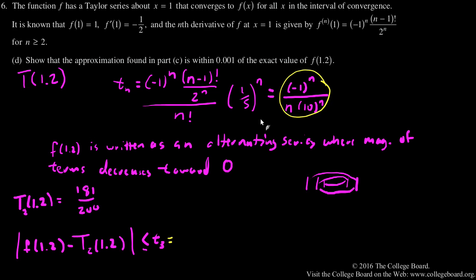The third degree term is this to the third power, so the magnitude is negative one to the third - which doesn't matter with the absolute value - all over three times ten to the third, which equals one over three thousand. This is clearly less than 0.001, that's one over one thousand. So all this together shows that we're within one-thousandth of the actual value of f of 1.2.